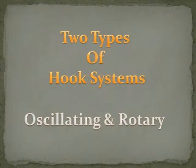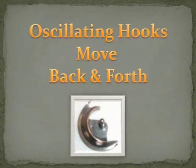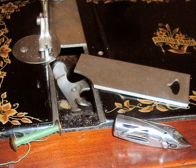We'll find that there are two different hook movement systems: one that is oscillating and one that is rotary. We'll also find that there are three different positionings of the hook systems that are typical in most sewing machines. Oscillating hooks move back and forth, while rotary hooks move around and around.